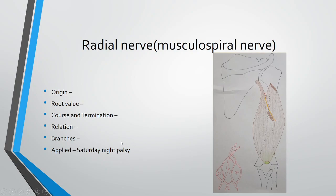The radial nerve mainly gives muscular, cutaneous, and articular branches. Before piercing the spiral groove, it supplies the long and medial heads of the triceps. In the spiral groove, it supplies the anconeus and medial head of the triceps. Below the groove, in the front, it supplies the brachialis, brachioradialis, and extensor carpi radialis longus muscles. It gives two cutaneous nerves in the arm: the posterior cutaneous nerve of the arm, and in the radial groove the lower lateral cutaneous nerve of the arm. It also supplies the elbow joint as an articular nerve.